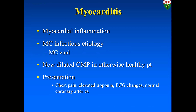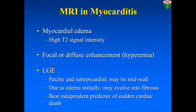Myocarditis stands for myocardial inflammation, most commonly from viral infection. Usually it's an otherwise healthy patient presenting with new onset dilated cardiomyopathy, chest pain, elevated troponin, EKG changes, but normal coronary arteries. On MRI, we look for edema using T2 sequences, focal or diffuse myocardial enhancement on early post-contrast imaging, and LGE showing patchy subepicardial or mid-myocardial high signal. The LGE initially reflects edema but may evolve into fibrosis and is the best independent predictor of sudden cardiac death. The early enhancement ratio has a less important role today, and T2 sequences have largely been replaced by T2 mapping.